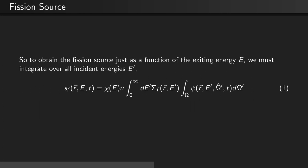So to obtain the fission source just as a function of the exiting energy E, we must integrate over all the incident neutron energies E'. Therefore, S_f is now equal to chi(E) nu times the integral from 0 to infinity with respect to dE' of the macroscopic fission cross-section multiplied by the integral of the angular flux over all angles.